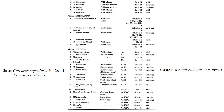Triticum dicoccoides and Triticum dicoccum are tetraploid, of the AABB type. Dicoccoides is wild emmer wheat and dicoccum is emmer wheat. Durum is durum wheat — these are all tetraploid. Triticum turgidum has AABB genome and is also tetraploid. Triticum aestivum is hexaploid. Macha and Vavilovii are all hexaploid as well.